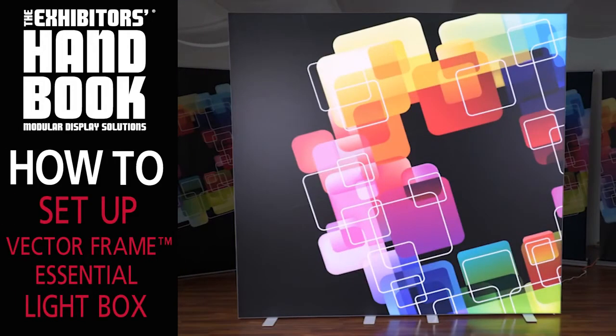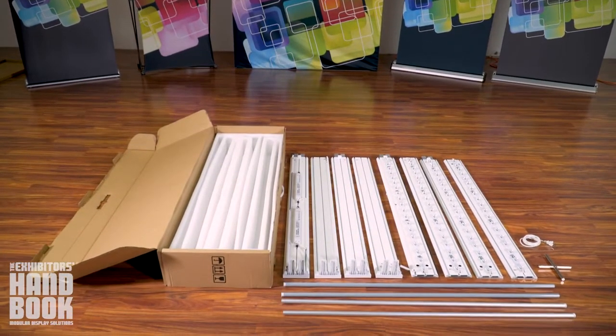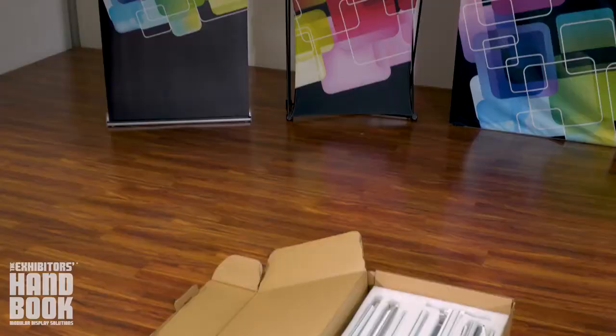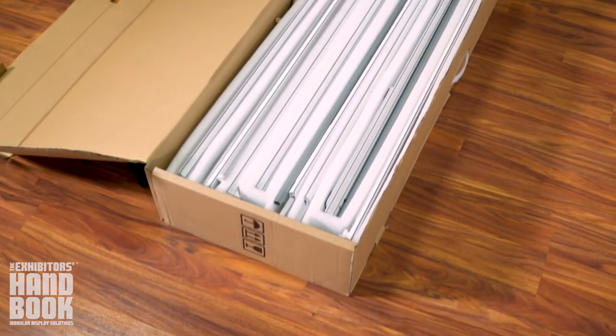The Vector Frame Essential Lightbox is an extraordinary and simple display comprised of a white aluminum frame, pre-assembled lights, and locking swivel feet. It also has reusable cardboard packaging with foam padding and a built-in handle.